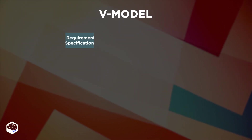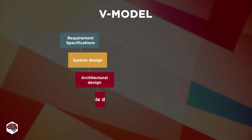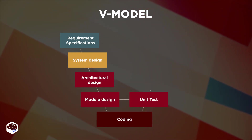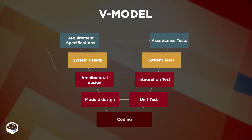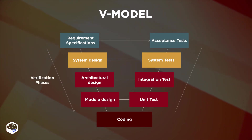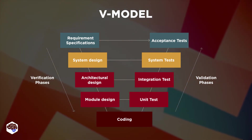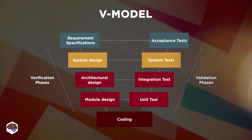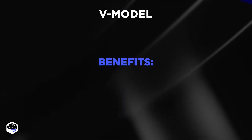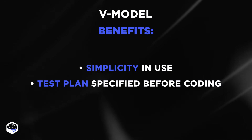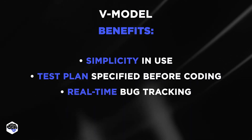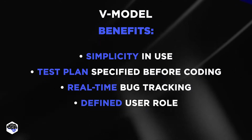V Model. This model is about planning the expected results right at the verification phase. The V Model breaks down the testing phase into detailed steps to ensure the validation and verification process. According to our team's experience, the V Model is rarely used these days. V Model benefits include simplicity in use, the test plan is specified before coding, real-time error tracking, and defined user role in the verification phase.